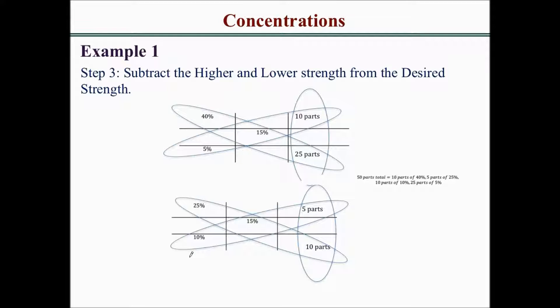You have 50 parts total. The proportions in descending order are: 10 parts of the 40% ointment, 5 parts of the 25% ointment, 10 parts of the 10% ointment, and 25 parts of the 5% ointment.